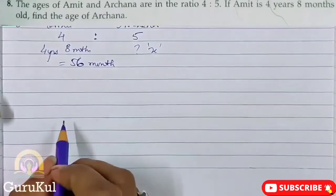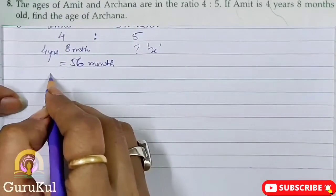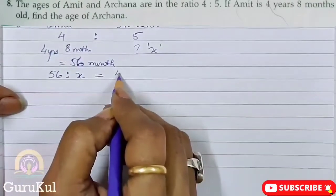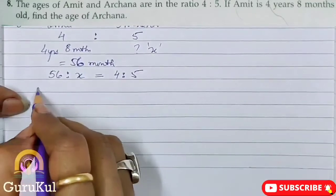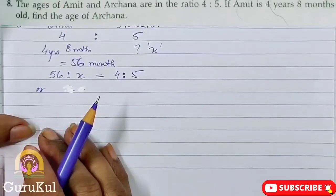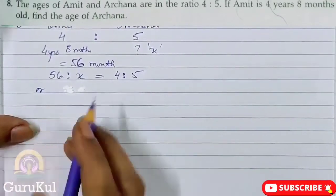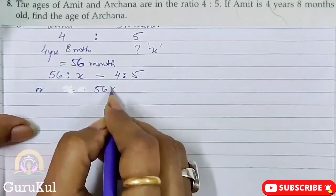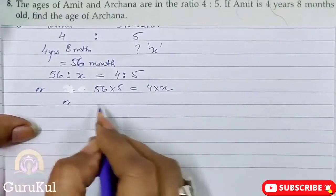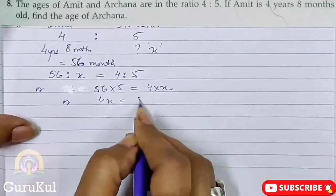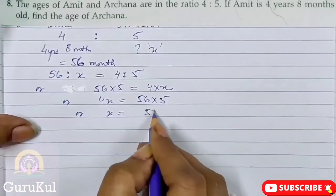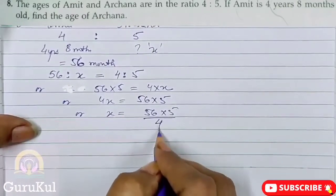Now we solve this equation. What is that? 56 is to X is equal to 4 is to 5. And now after this we will find product of extremes is equal to product of means. That means 56 into 5 is equal to 4 into X, or 4X is equal to 56 into 5.